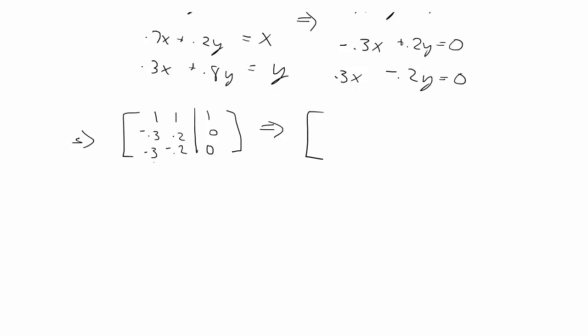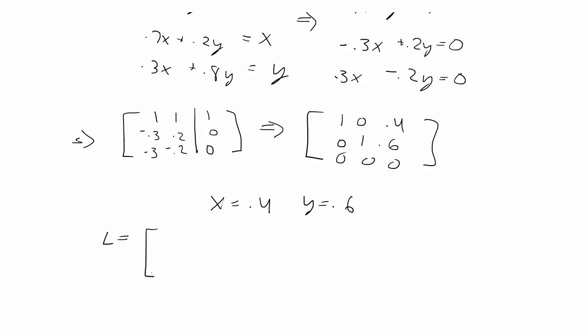To put this in your calculator, you just do second matrix, which is the inverse symbol. You edit the matrix that you want, then you go to math and select RREF. Put in the matrix and that will give you the output. The outcome I get is [1, 0.4; 0, 1.6; 0, 0, 0], which you interpret as X equals 0.4 and Y equals 0.6.